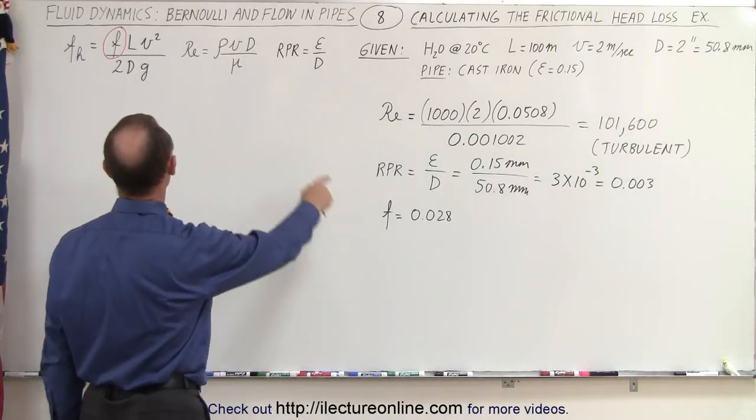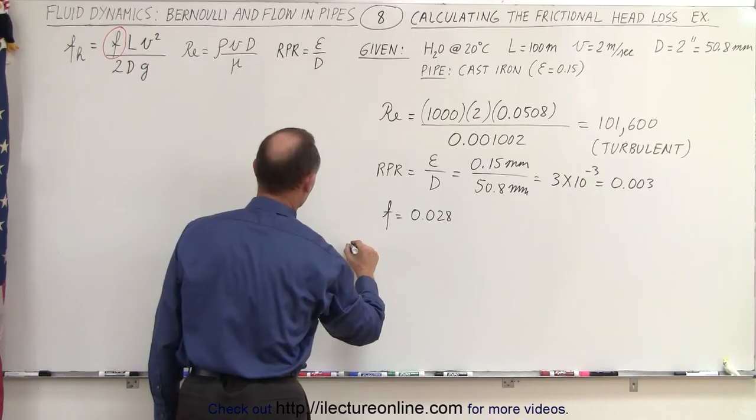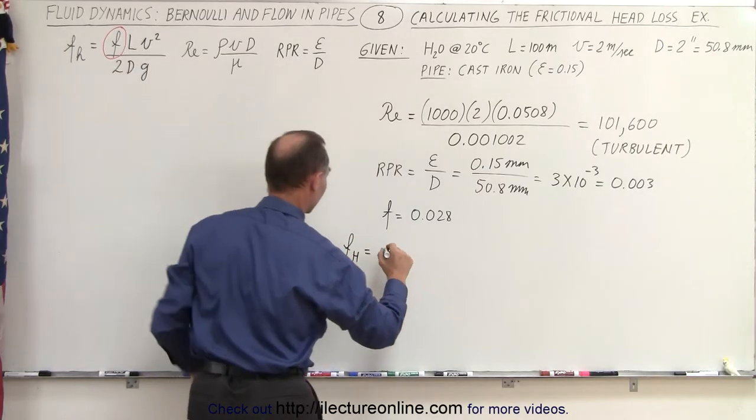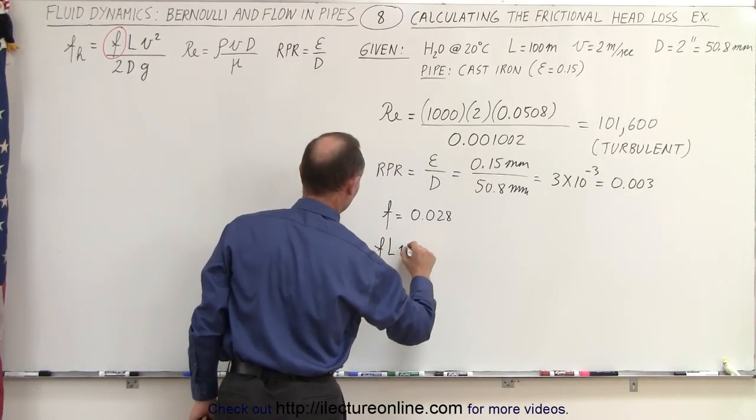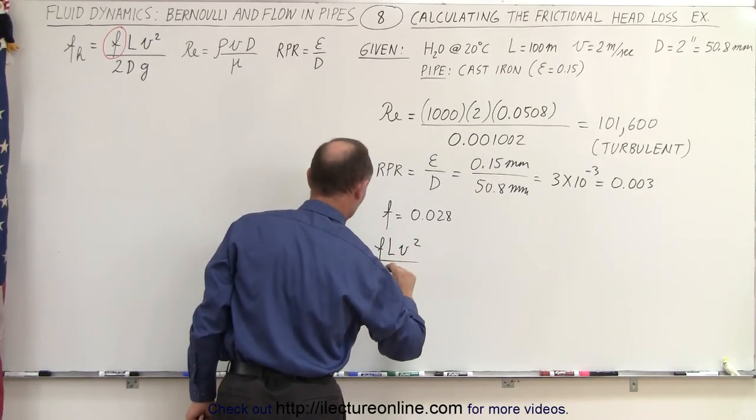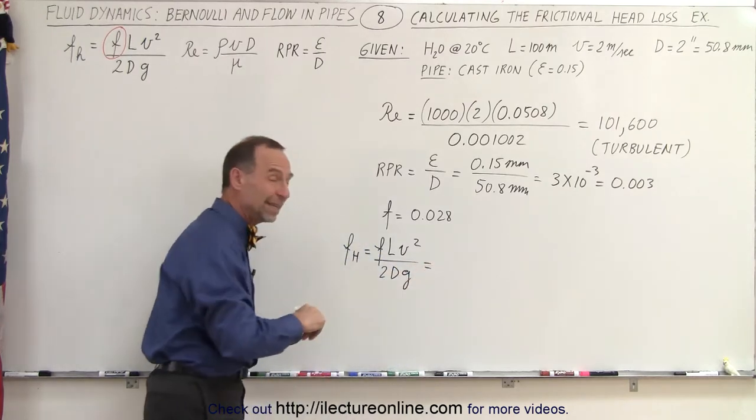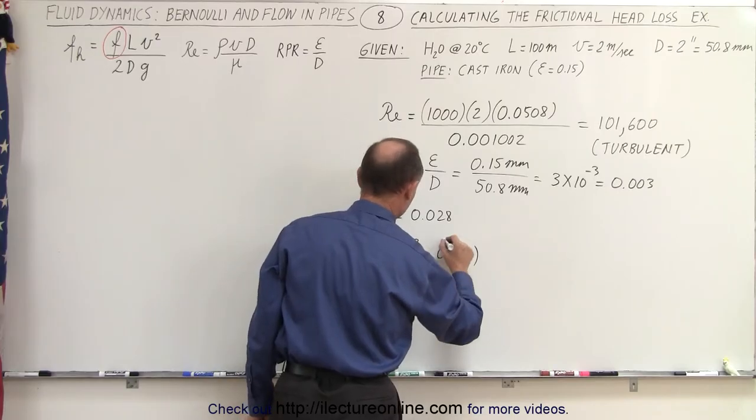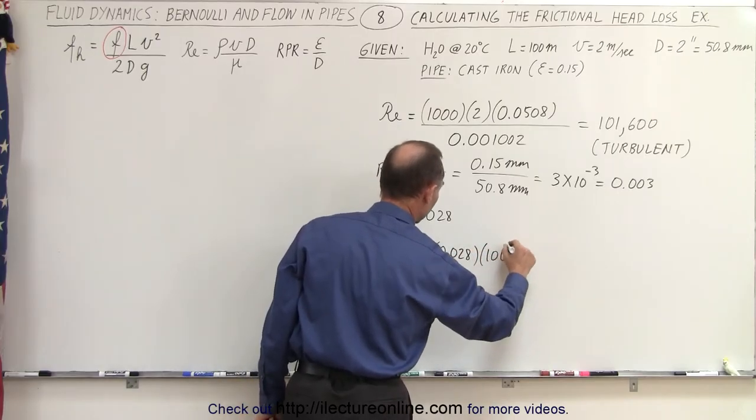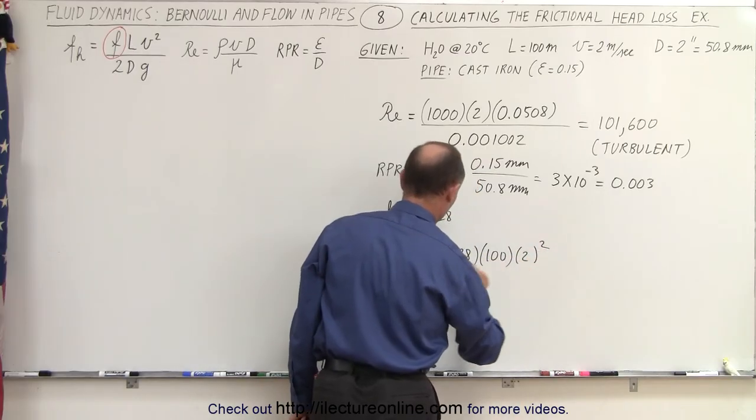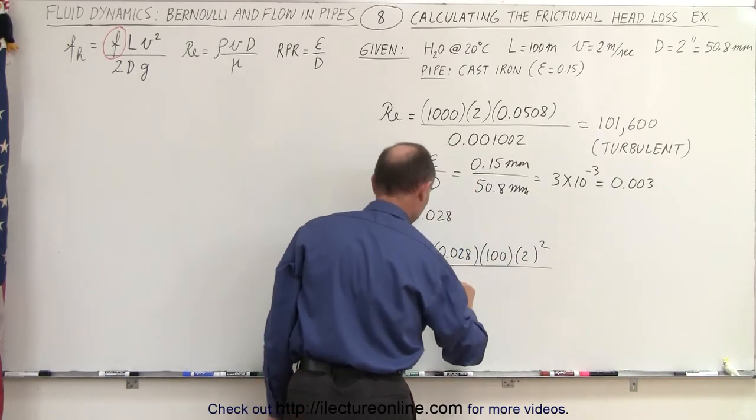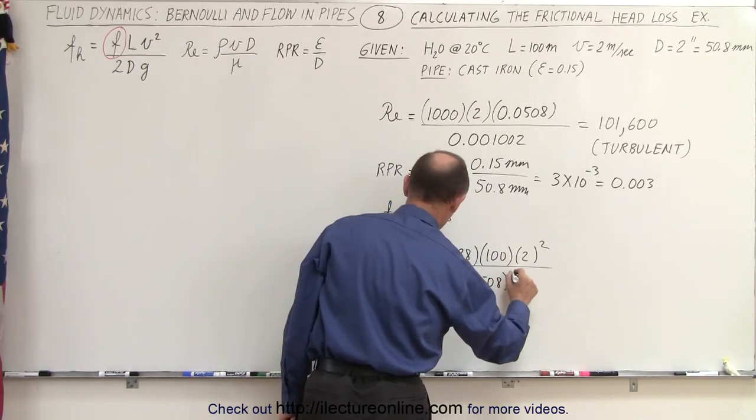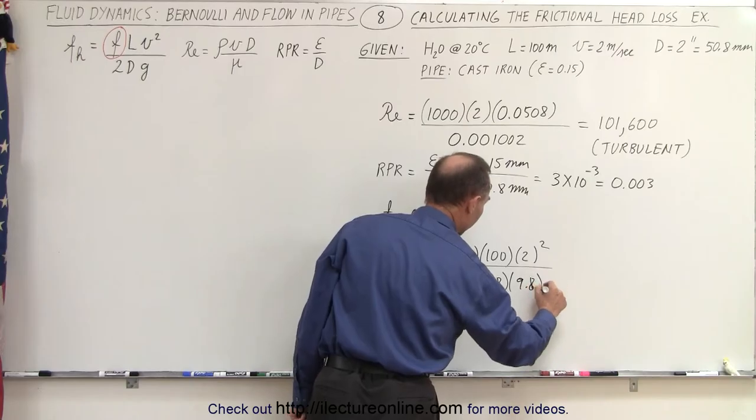So now that we have the friction factor, now we can go ahead and calculate the head loss. So the friction factor, let's go ahead and put in the equation F times the length times V squared divided by 2 times the diameter times G. And of course that's going to be in meters. So we put down the factor 0.028 times the length, 100 meters. The velocity squared, which is 2 squared divided by 2 times the diameter in meters, which is 0.0508. And G, which is 9.8.